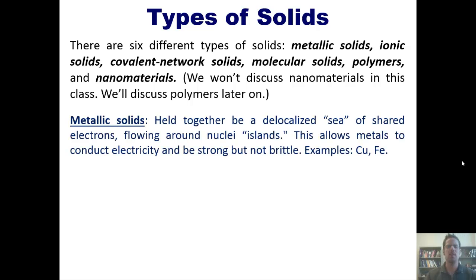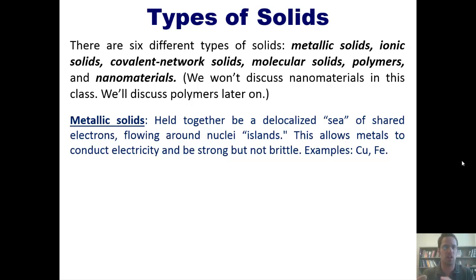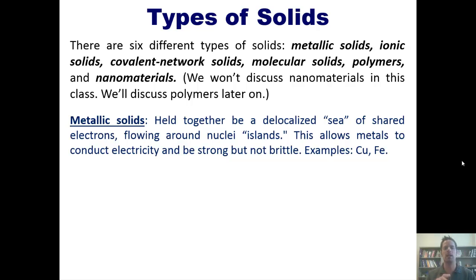First are metallic solids. Metallic solids are really just solid metals. If you were to look very, very closely at solid metals, what you would see is that they look like delocalized seas of electrons floating around little islands that are their individual nuclei. This reality allows metals to conduct electricity, but also to be strong while not brittle. Examples include copper and iron, as well as most of the other metals on the periodic table.